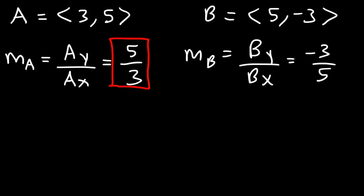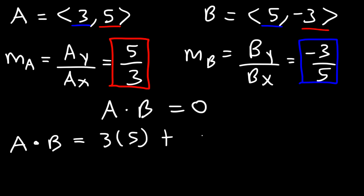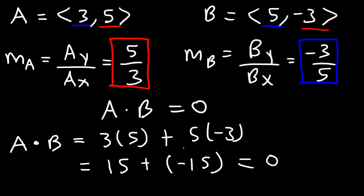So what do you notice about these two slopes? Notice that they are the negative reciprocals of each other, and whenever you see that, it means that the two vectors are perpendicular. The other way to determine that they're perpendicular or orthogonal is to take the dot product — if the dot product is 0, then we know it's orthogonal. So the dot product is 3 times 5 plus 5 times negative 3, which is 15 plus negative 15, and this adds to 0. Since the dot product equals 0, these two vectors are orthogonal, meaning they're perpendicular.